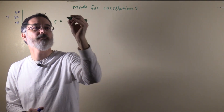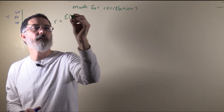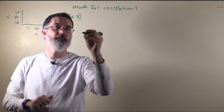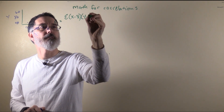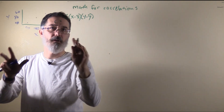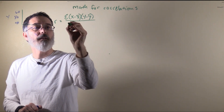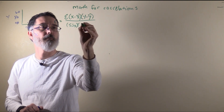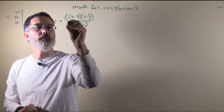The formula to calculate this correlation coefficient is the sum of each x-deviation score multiplied by that score's y-deviation score, divided by the square root of the sum of squares x multiplied by the sum of squares y.